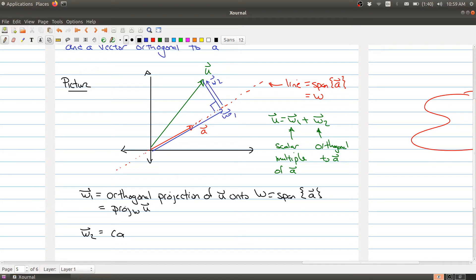And w2 is called the complement of u orthogonal to w, because the vector w2 is not only orthogonal to the vector a, it's orthogonal to every vector that's inside of the span. So we're decomposing it into two parts.